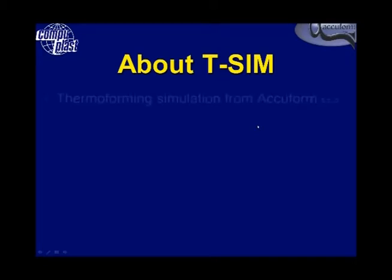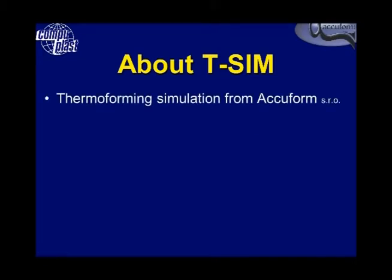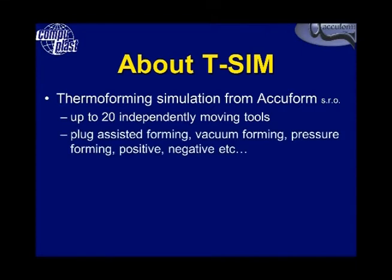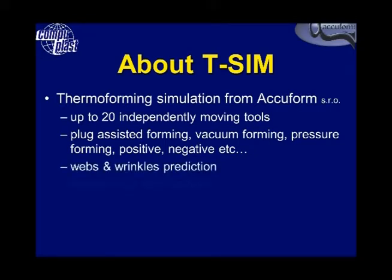T-Sim is a thermoforming simulation package developed by AccuForm in the Czech Republic. It has the ability to have 20 independently moving tools, so it can handle very complex forming applications — from plug-assisted forming, vacuum forming, pressure forming, positive, negative, just about anything you can think of. The software can handle the tool movement and the conditions required, and can also predict webs and wrinkles during forming.